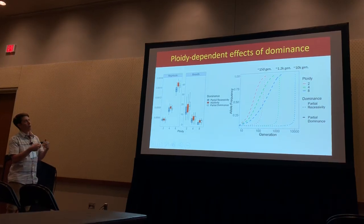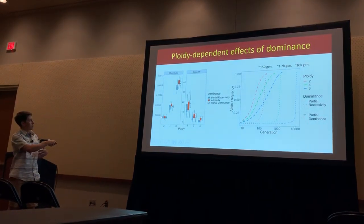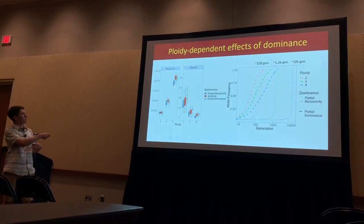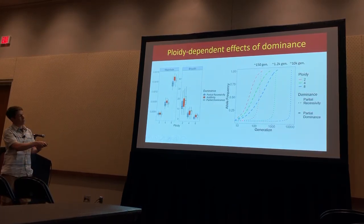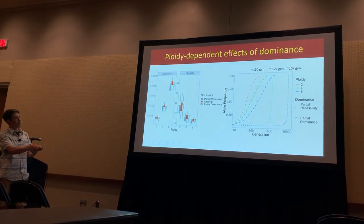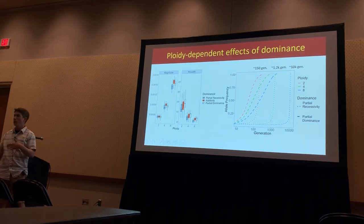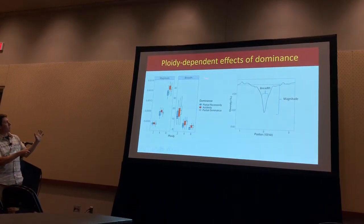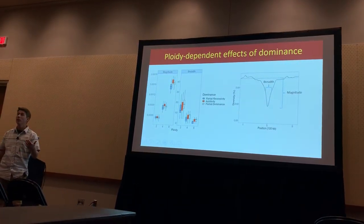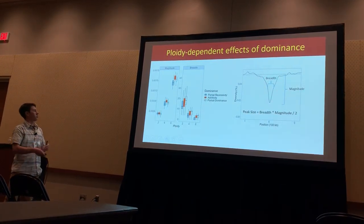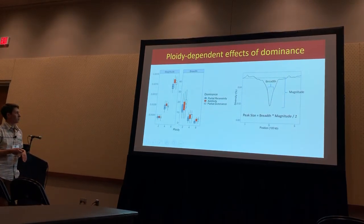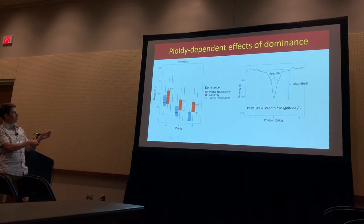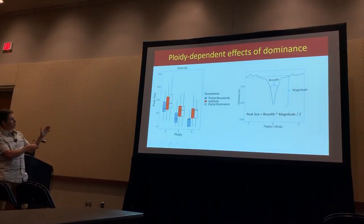You can see this manifest as a ploidy-dependent effect of dominance on the signal we get afterwards. Looking across our dominance categories, there's really no difference between diploids, they start to separate in tetraploids, and in octoploids the recessive mutations are not nearly as deep as the others — because they delay at low frequencies for a really long time before finally reaching that critical frequency and shooting up. To condense these graphs, I'll calculate the area of this triangle as a 'peak size' metric, and we still see this ploidy-dependent effect of dominance.